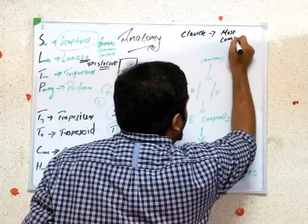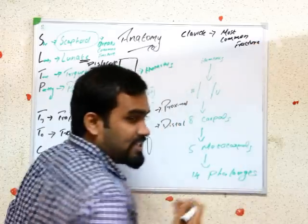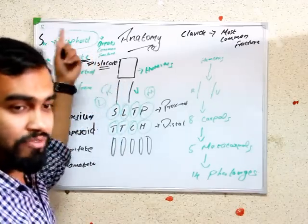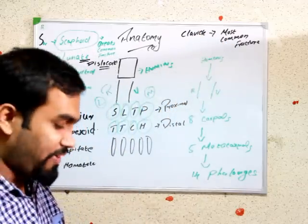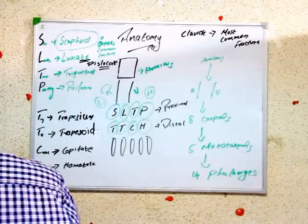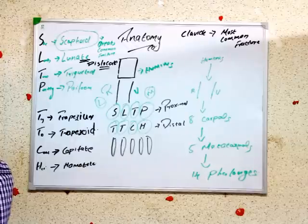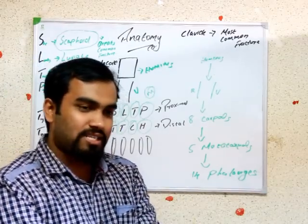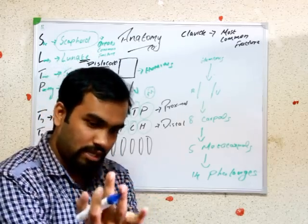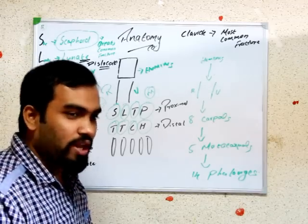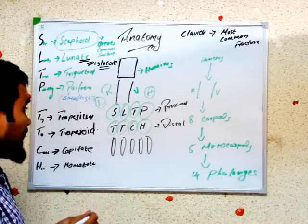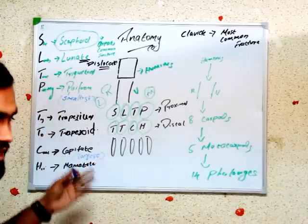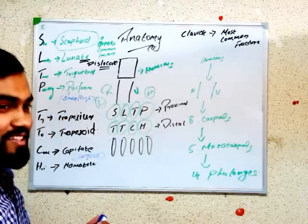Now another question: which bone in our entire body is most commonly fractured? That is the clavicle. The clavicle is the most commonly fractured bone in the body overall. Note: scaphoid is the most commonly fractured among carpal bones specifically, but clavicle is the most commonly fractured bone in the whole body. Also, which is the smallest carpal bone? That is the pisiform.